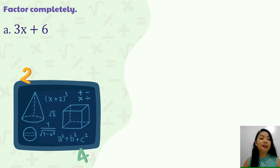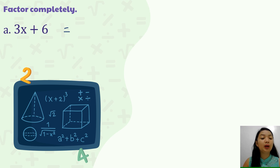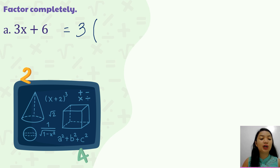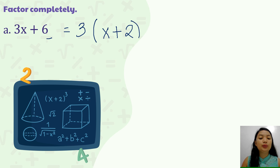Now we factor completely by applying the greatest common factor. For 3x plus 6, both terms are divisible by 3, so the GCF is 3. We divide each term: 3x divided by 3 gives x, and 6 divided by 3 gives 2. So the factored form of 3x plus 6 is 3 times the quantity x plus 2.